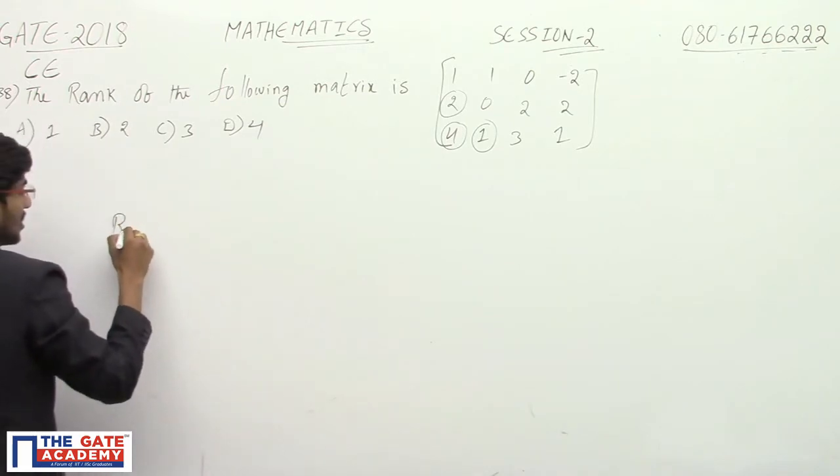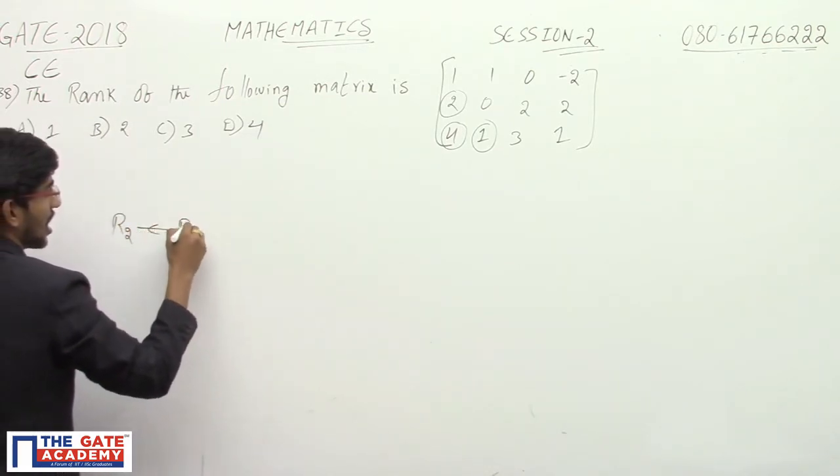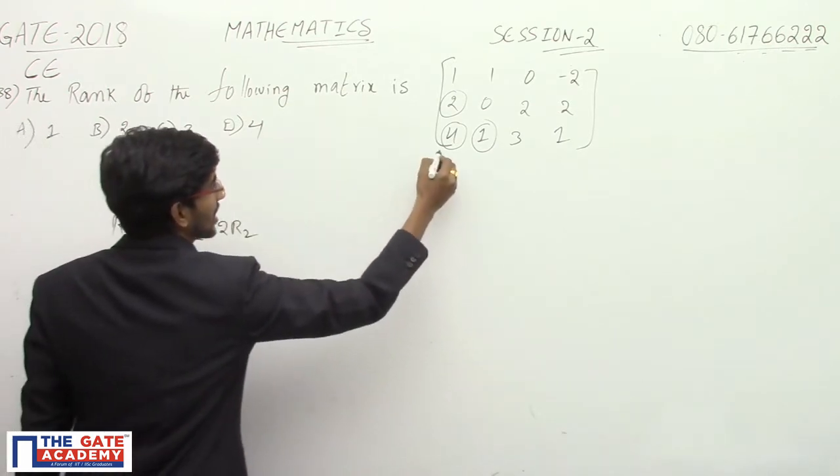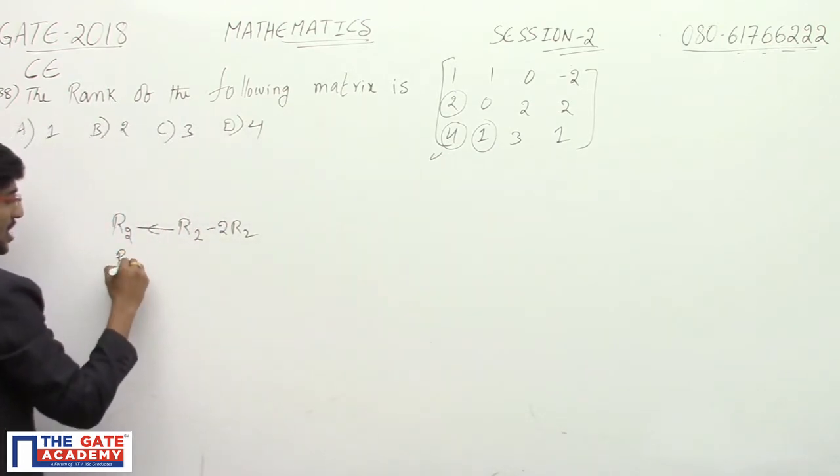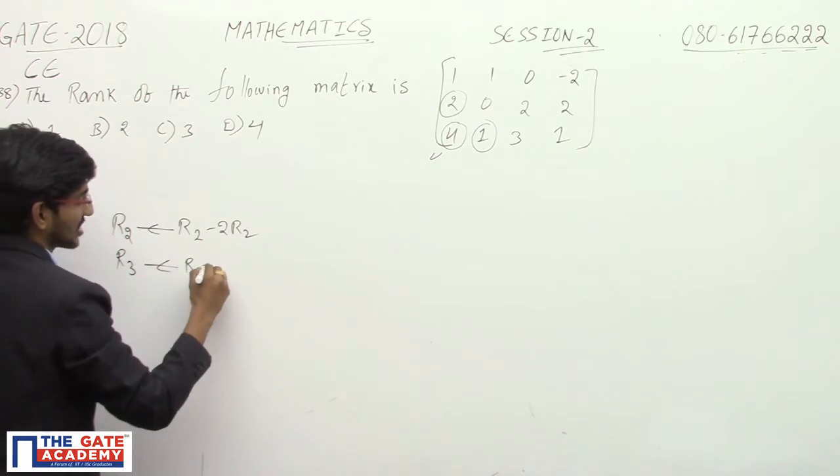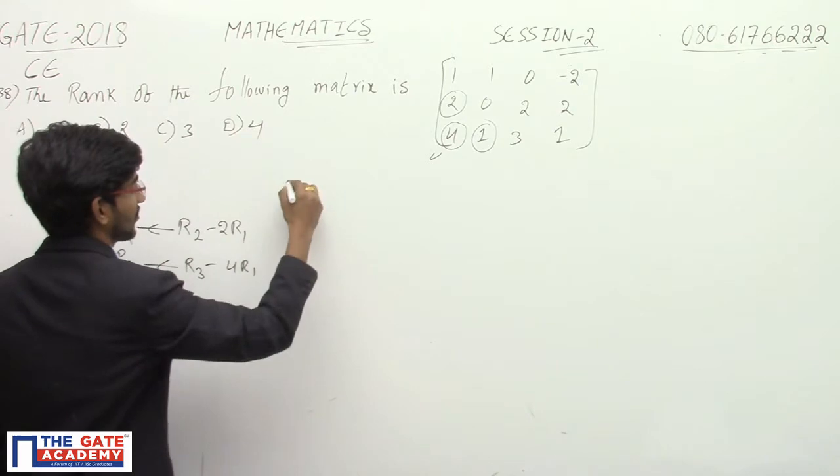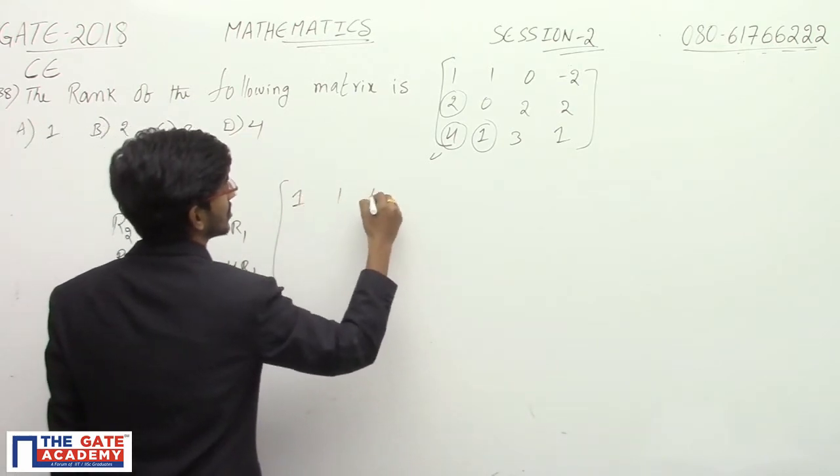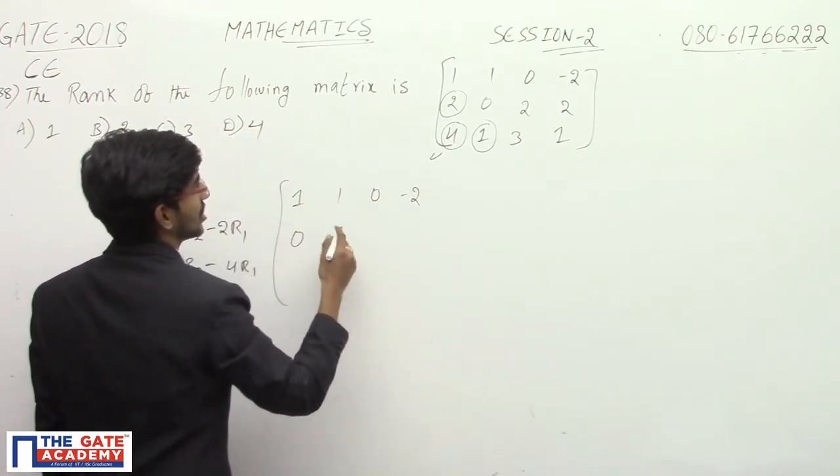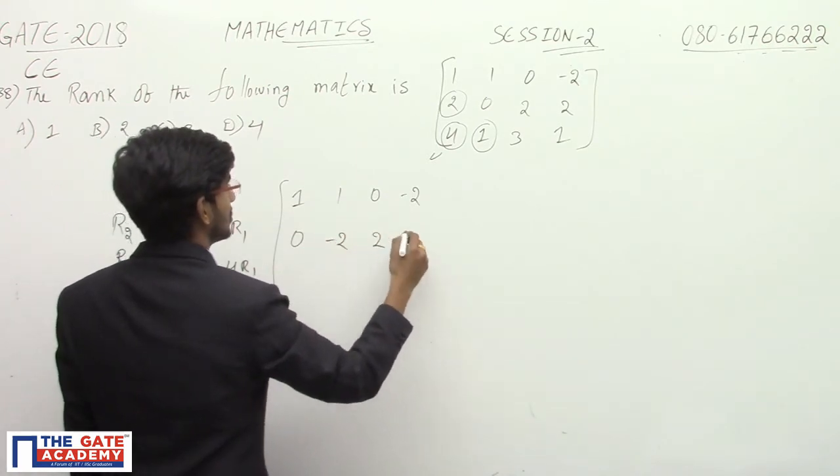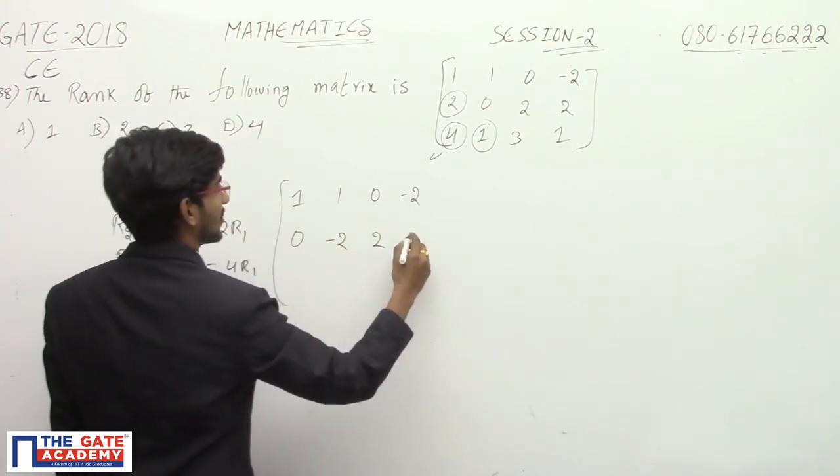To make this value zero, apply row operations: R2 → R2 - 2R1, and to make this value zero, R3 → R3 - 4R1. R2 minus 2R1 gives 0, 0, -2, 2. R3 minus 4R1 gives 0, -2, 2 plus 4 equals 6.